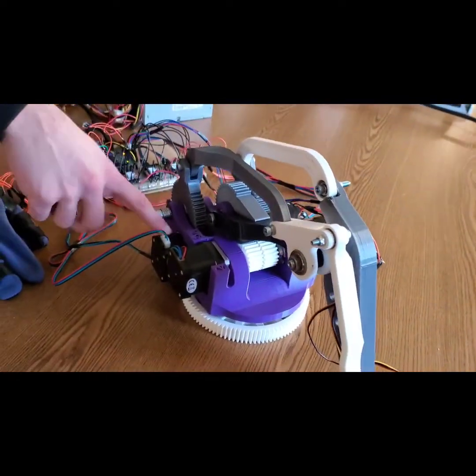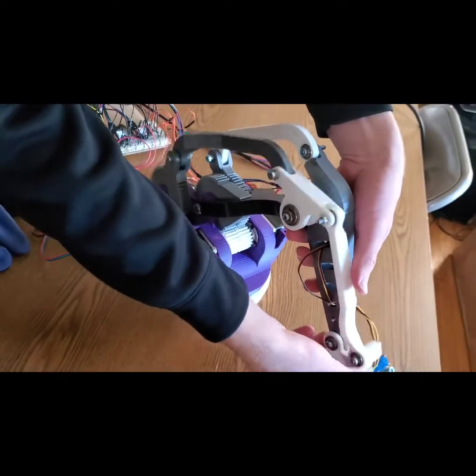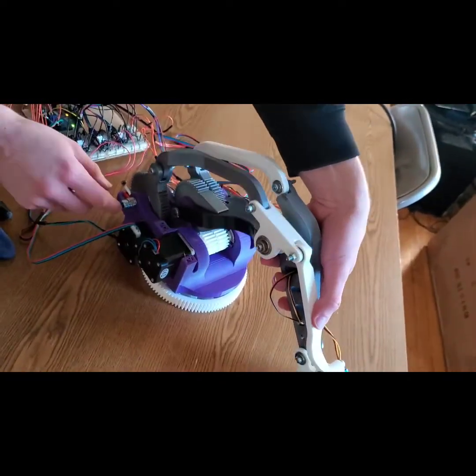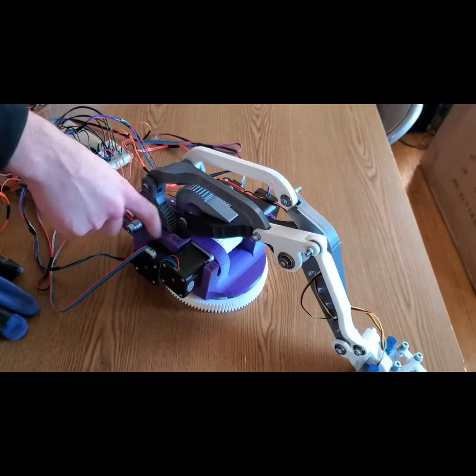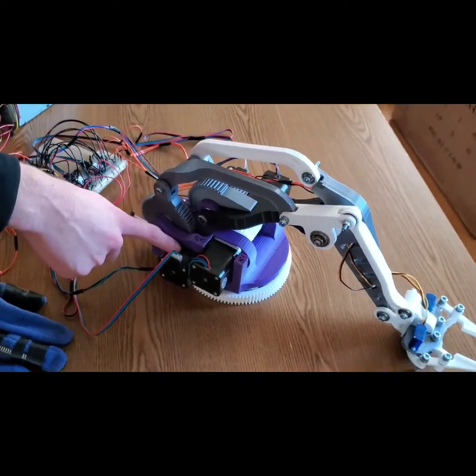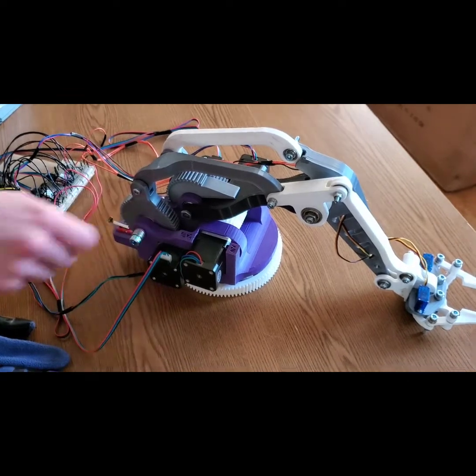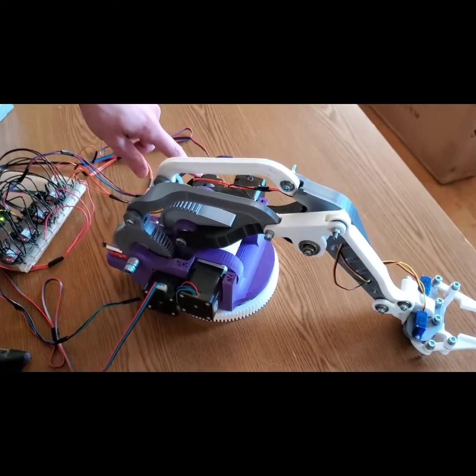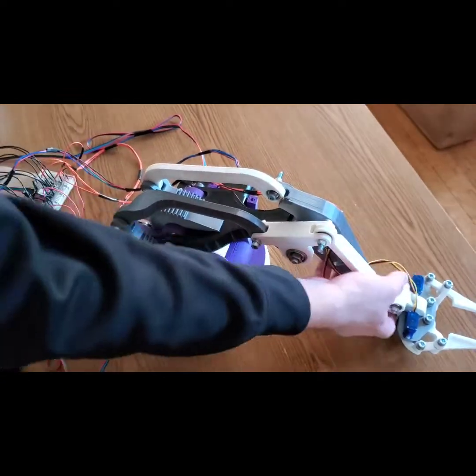This motor controls the up and down of the claw. There's no gear reduction on this one, it's just a 3D printed gear on the motor and then another 3D printed gear. This one is the same deal. This one makes the robot go this way.